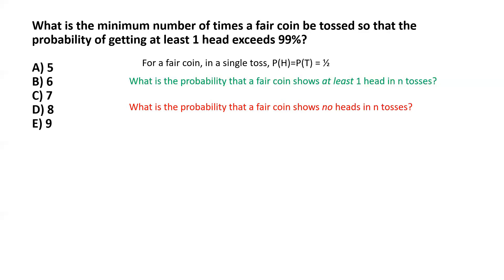So let's now focus on solving the probability of the complementary event, which may be easier. The complementary event here is the fair coin showing no heads in n tosses. For that to hold true, the coin must show a tail in the first toss, a tail in the second toss, and so on all the way up to the nth toss.